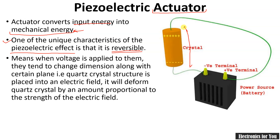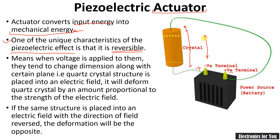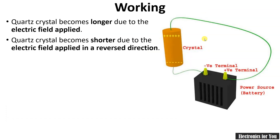When we apply positive charges on one side and negative charges on the other, the crystal may expand. If we reverse the terminals — positive on the opposite side — the crystal will try to contract itself. Whatever direction of voltage is applied, the crystal changes dimensions accordingly. The amount of voltage is directly proportional to the dimension change. In summary, the quartz crystal becomes longer due to the applied electric field and shorter when the field is reversed.